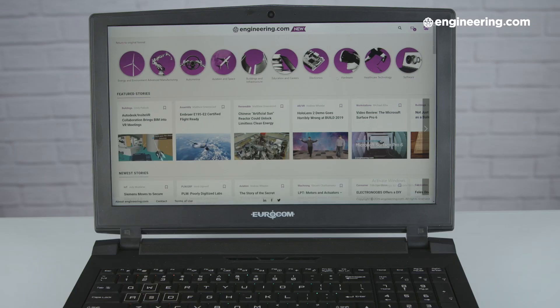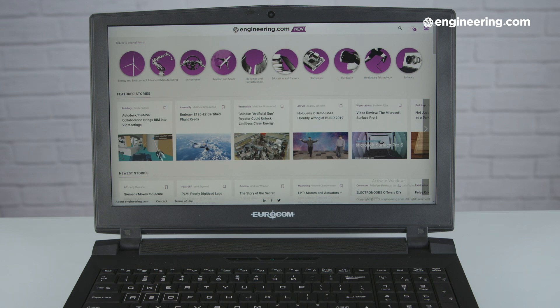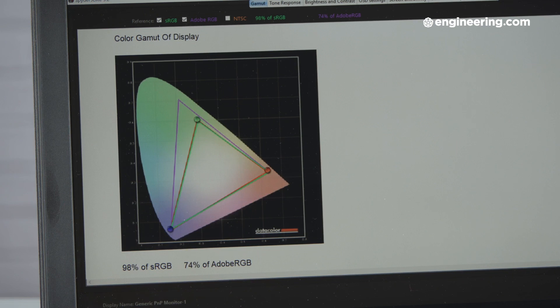Next, we tested the display of the Sky X4C. It's a 15.6 inch display, and our unit had a 3840x2160 resolution, but you can also get it in 1920x1080. Our display was pretty average in terms of color coverage, hitting 98% of the sRGB color space, but only 74% of Adobe RGB.